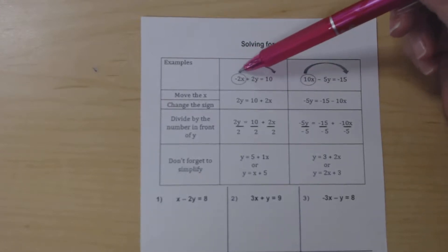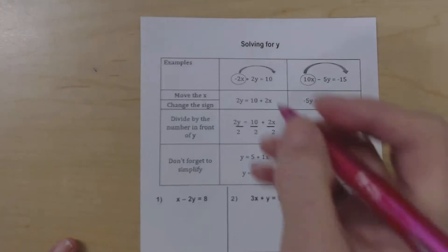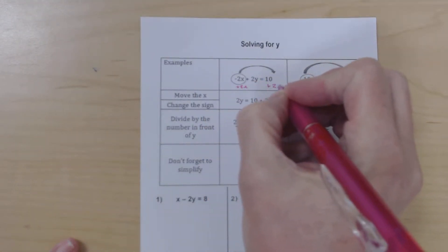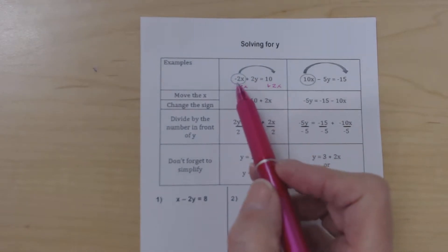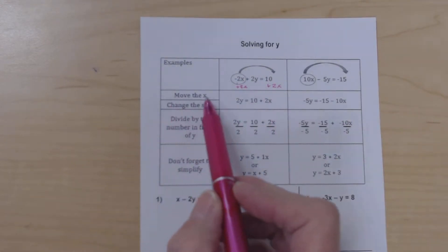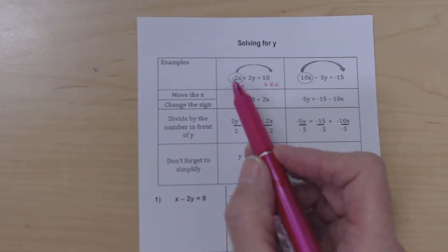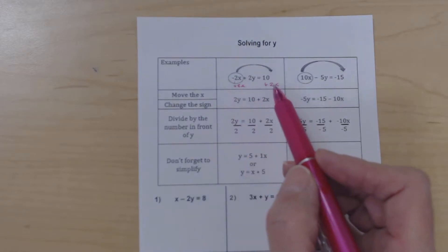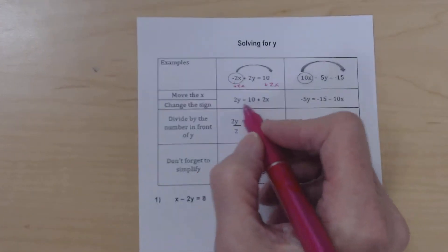And we've circled this and drawn an arrow over because really what we're going to do is add 2x to both sides. And that effectively takes this one to the other side and changes its sign. So it's move the x, change the sign. We change this from a negative 2x to a positive 2x, and we moved it from the left side to the right side of the equation as we see here.